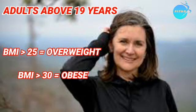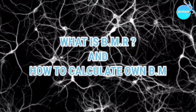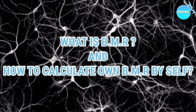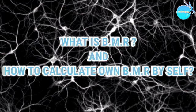In the case of adults above 19 years, if BMI is greater than or equal to 25, the person is overweight, and if BMI is greater than or equal to 30, the person is obese. So now, what is BMR and how can a person calculate their own body's BMR?